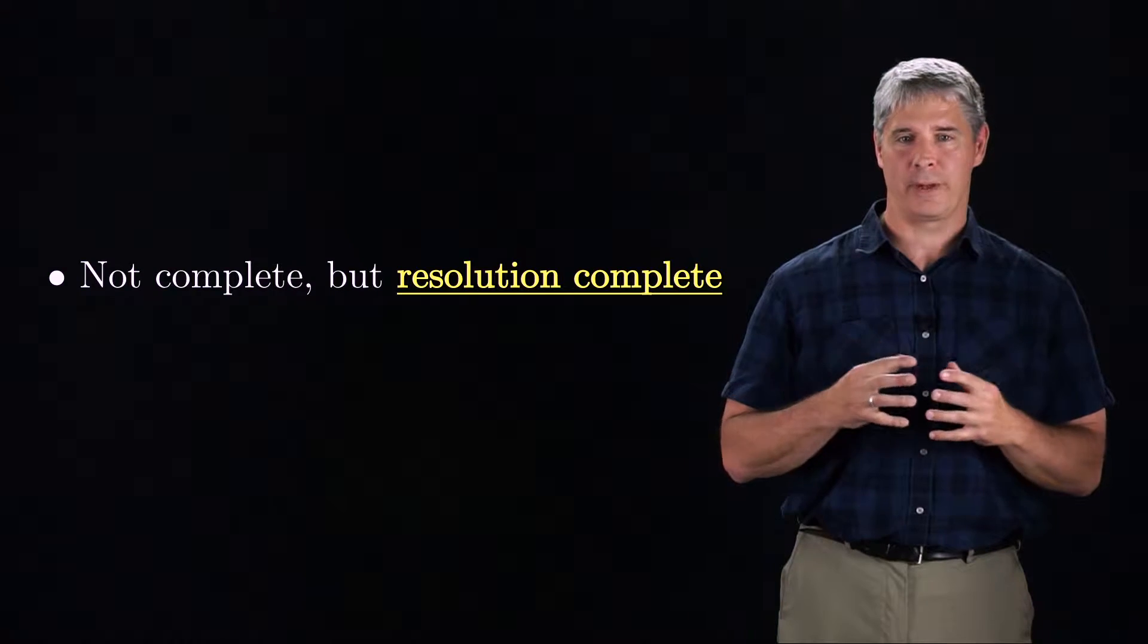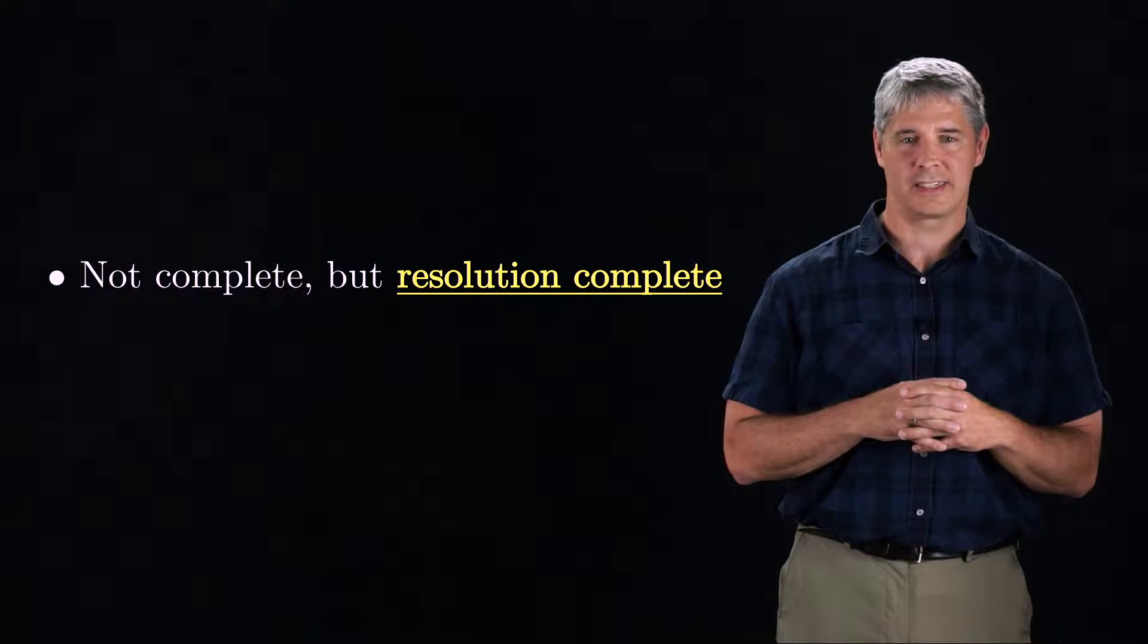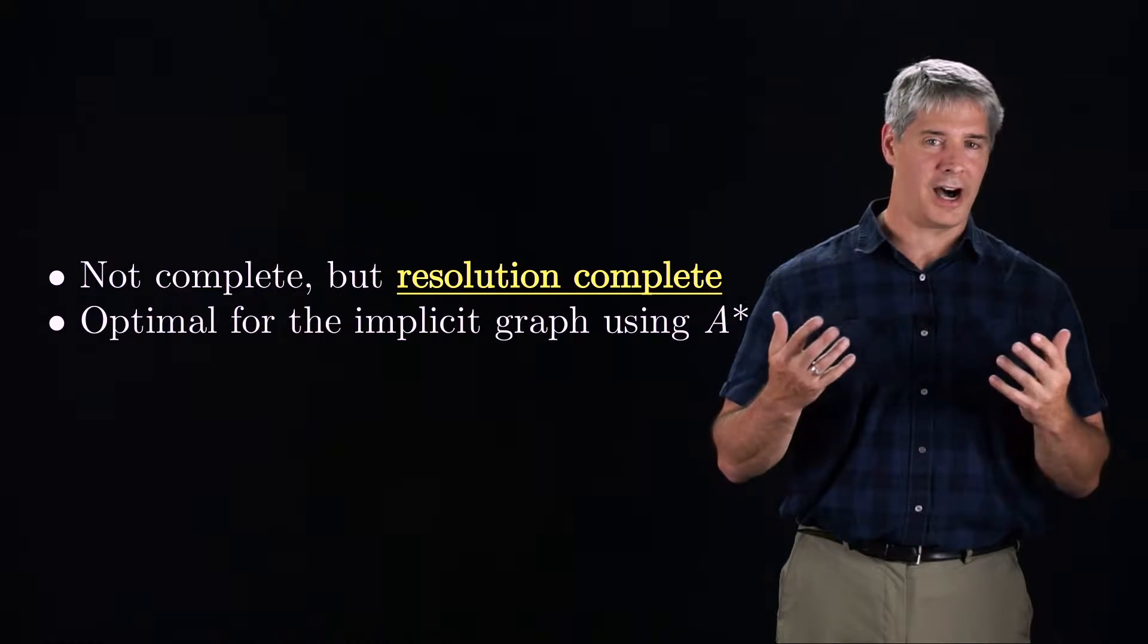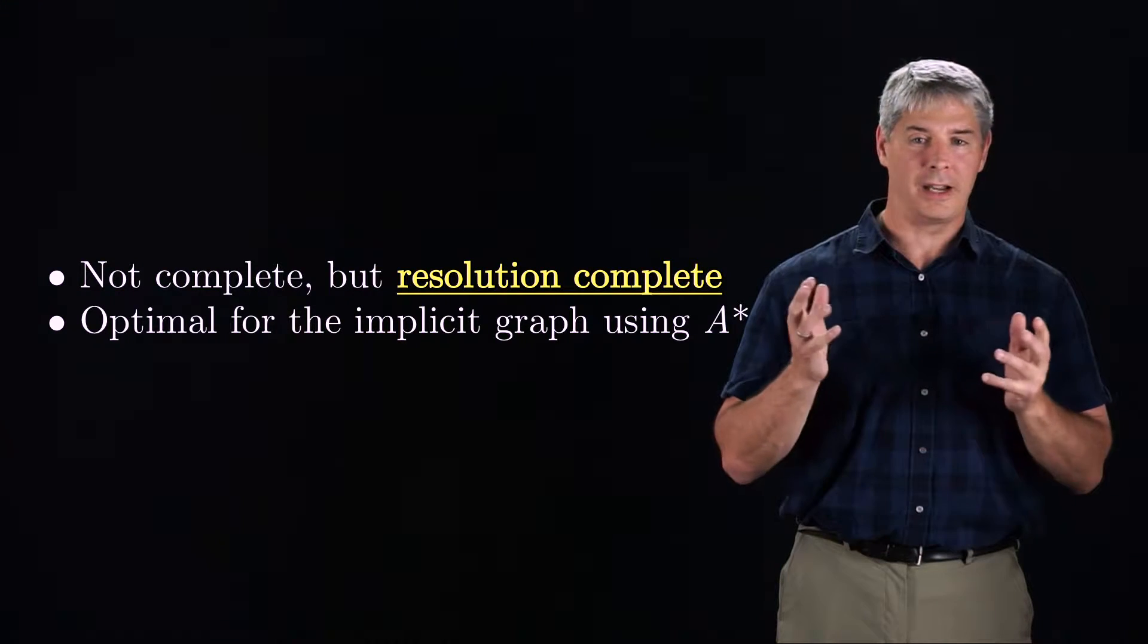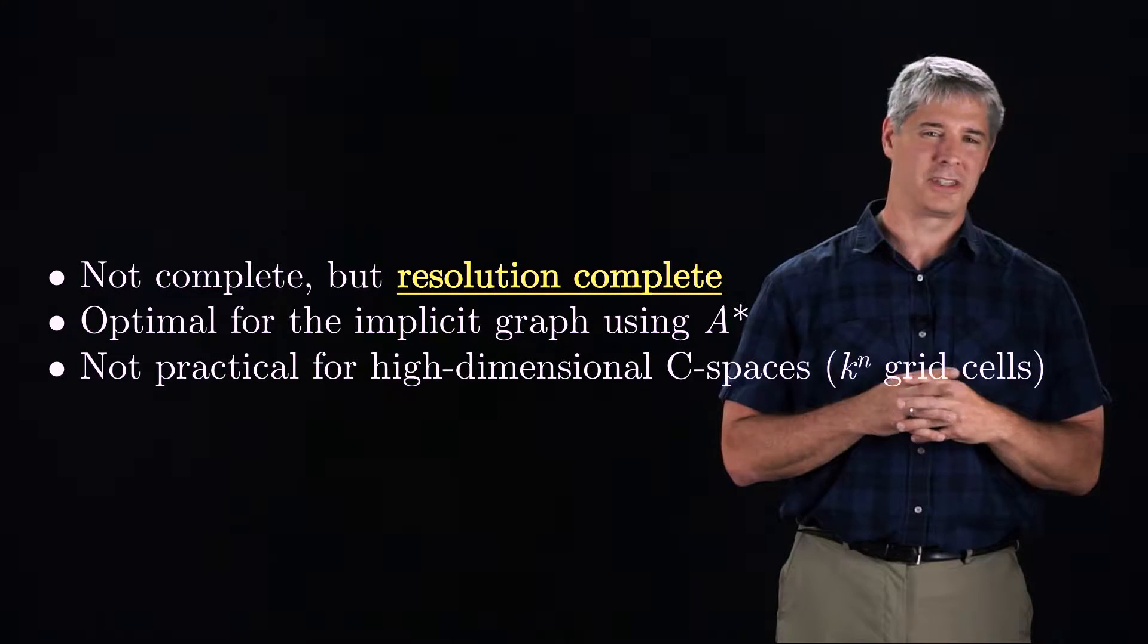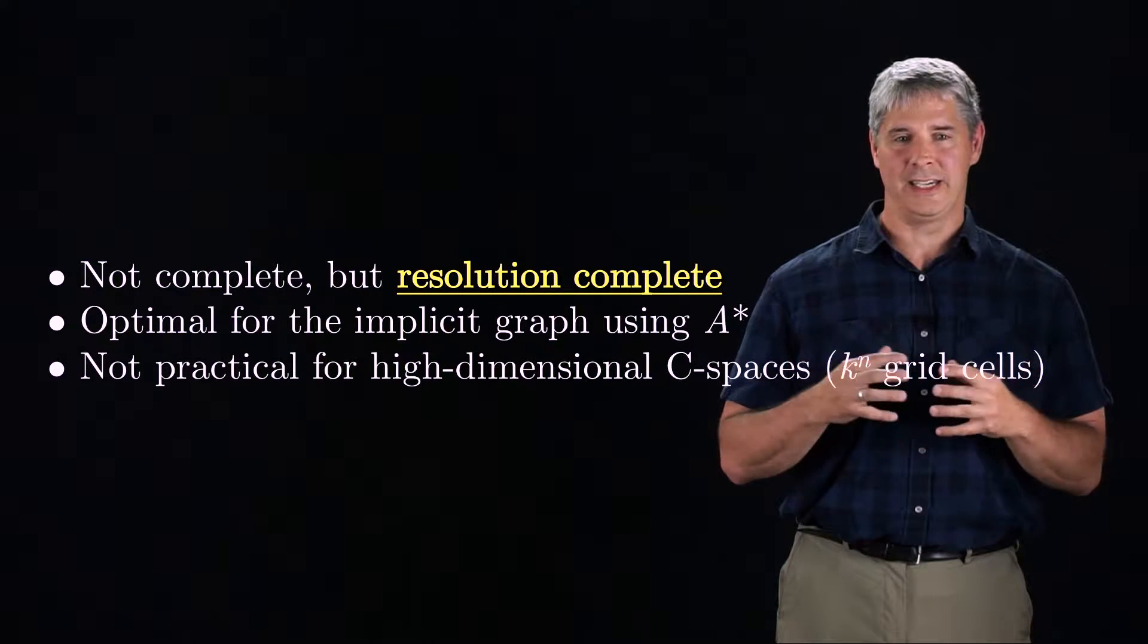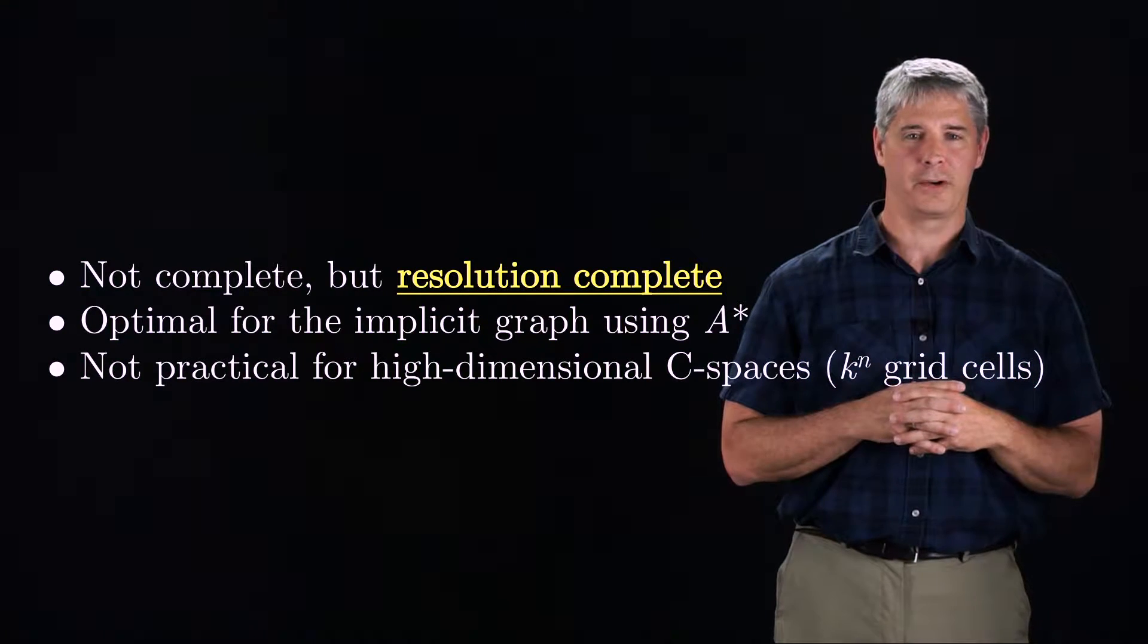Because of the discretization of C space, the grid-based planner is not complete, but it is resolution complete, meaning that it will find a path if one exists at the level of discretization chosen. The solution path is optimal for the underlying graph using A-star search. But a major drawback is that this approach is not practical for high-dimensional spaces. The amount of memory needed to represent the grid and the time to search the graph grows quickly with the number of degrees of freedom.